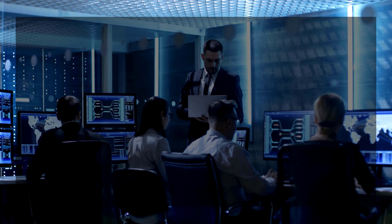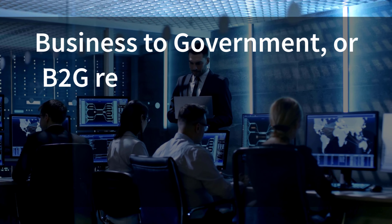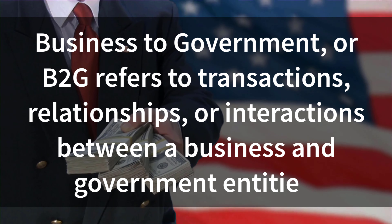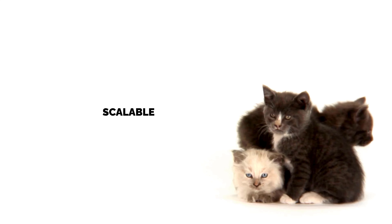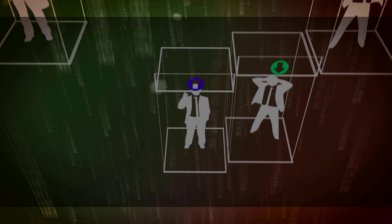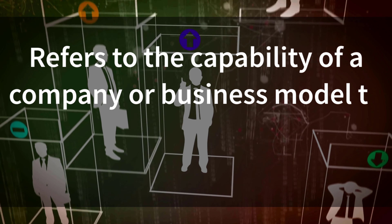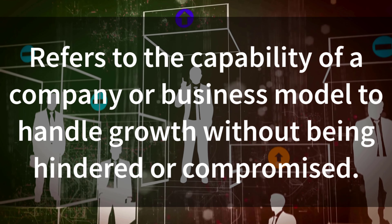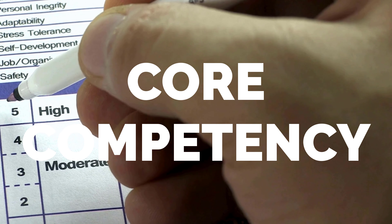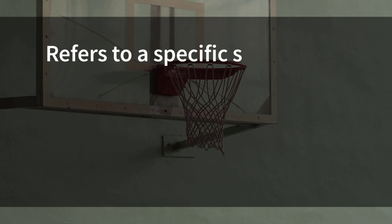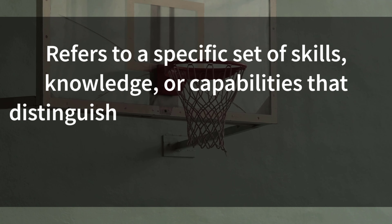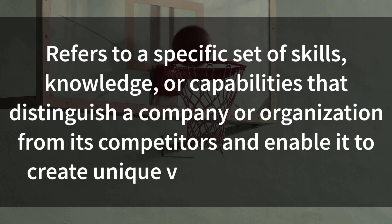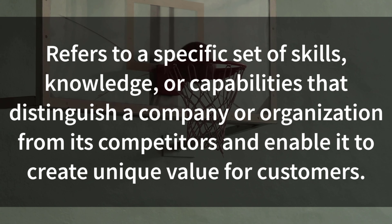B2G: Business to government, or B2G, refers to transactions, relationships, or interactions between a business and a government entity. Scalable: Refers to the capability of a company or business model to handle growth without being hindered or compromised. Core Competency: Refers to a specific set of skills, knowledge, or capabilities that distinguish a company or organization from its competitors and enable it to create unique value for customers.